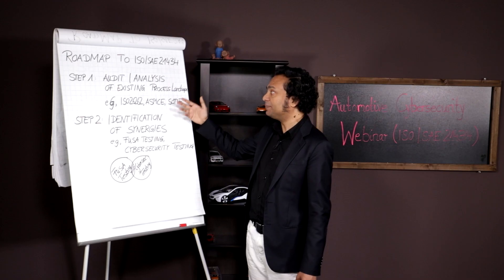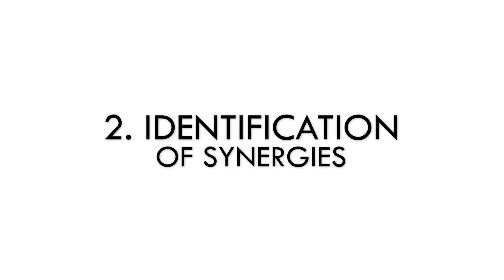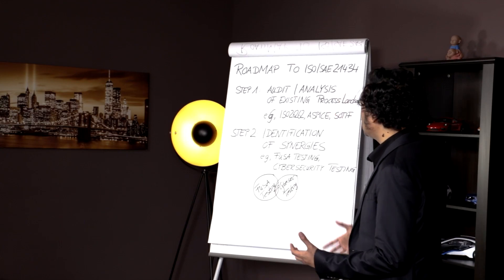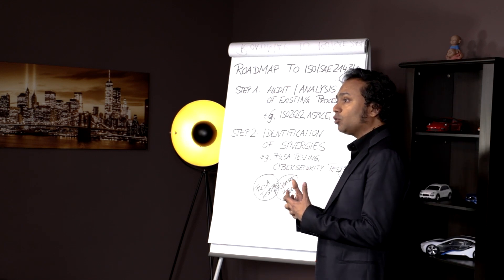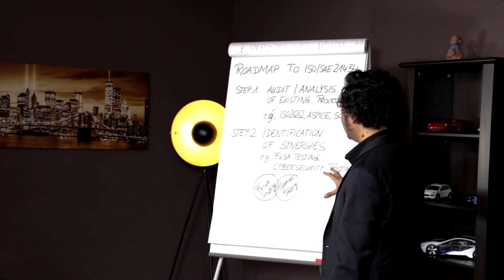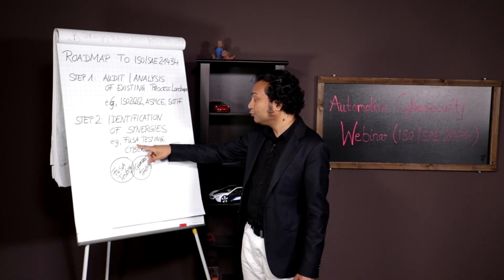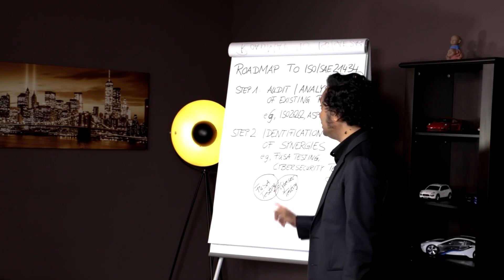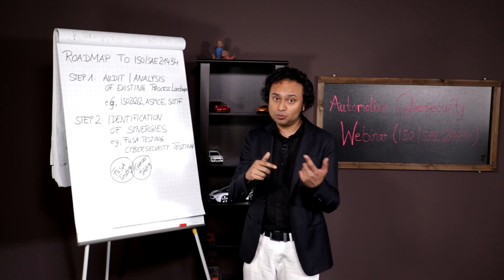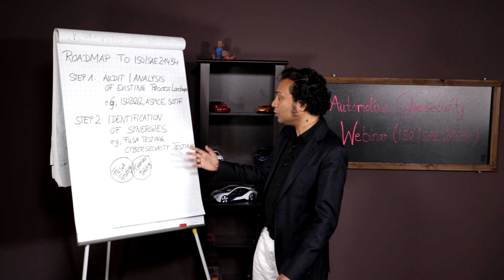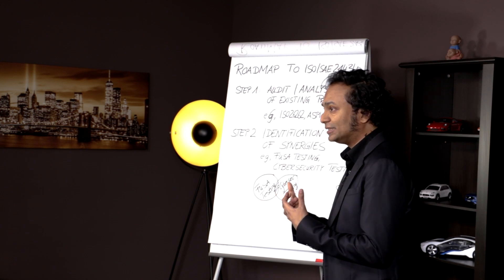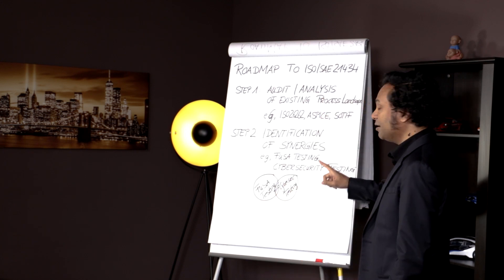There is another reason for doing the gap analysis or audit as step two. We need to also identify the synergies of ISO 21434 and the other existing processes. If you have a very strong FUSA process, we need to find out where can we synergize. One typical example is we can find synergies between FUSA testing and cybersecurity testing. There is an overlap and this is where you can save money. So this is really important for two reasons. First of all, you want to optimize, you want to save money. And secondly, you also want to make sure that you will be able to harmonize the new process that you're going to roll out with your existing process landscape. And that's why this is very important.